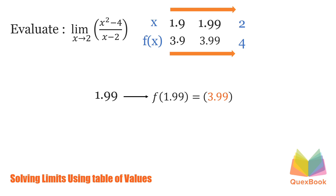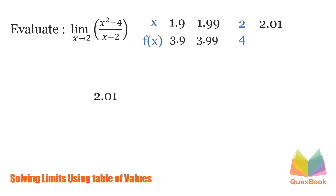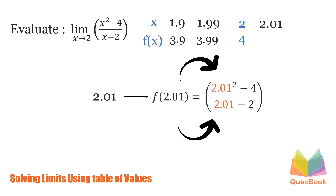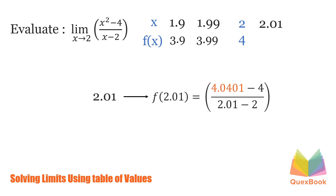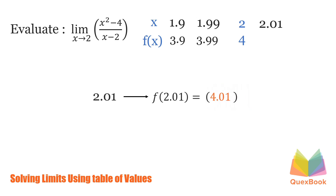But to make it sure, let's try the values on the other side. How about we plug in 2.01? Let us evaluate the function. We have 2.01 squared minus 4 over 2.01 minus 2. 2.01 squared is 4.0401, minus 4 will have 0.0401. Now, 2.01 minus 2 is 0.01. Dividing the function, we'll have 4.01.